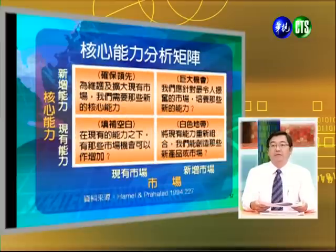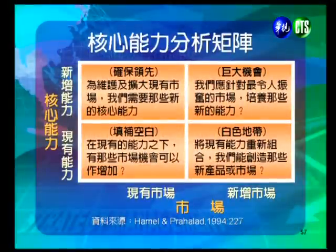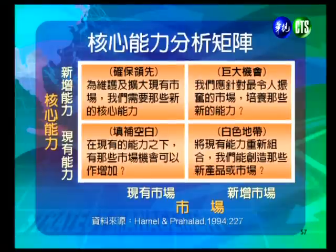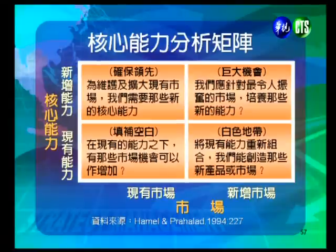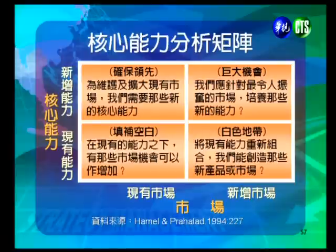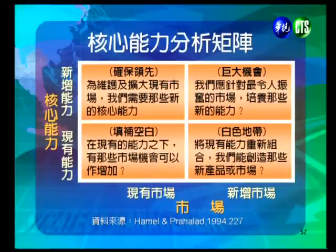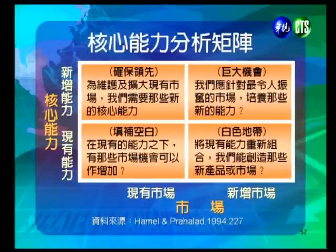從矩陣圖形來看，橫軸是市場（分新增市場和現有市場），縱軸是核心能力（分新增能力和現有能力），形成四個部分。右上角是巨大機會策略，要思考應針對最令人振奮的市場培養哪些新的能力。右下角是白色地帶策略，要思考將現有能力重新組合，能創造哪些新產品或新市場。填補空白的策略要思考在現有能力下有哪些市場機會可以增加。確保領先的策略則思考為維護及擴大現有市場需要哪些新的核心能力。